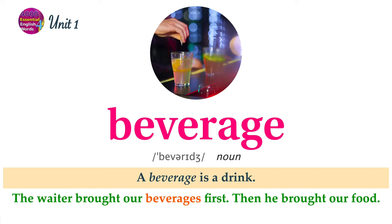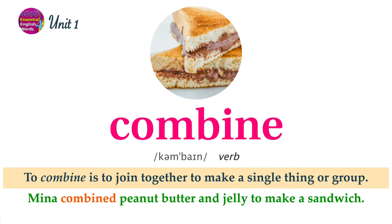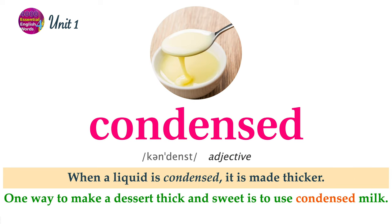A beverage is a drink. A cluster of things is a small group of them placed close together. To combine is to join together to make a single thing or group. When a liquid is condensed, it is made thicker. One way to make a dessert thick and sweet is to use condensed milk.